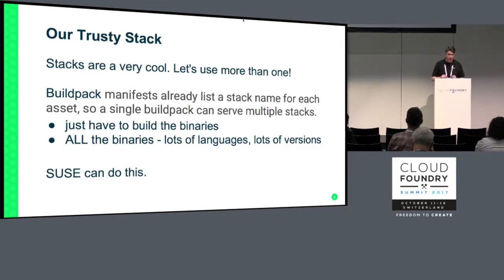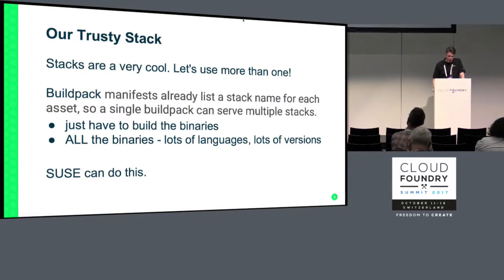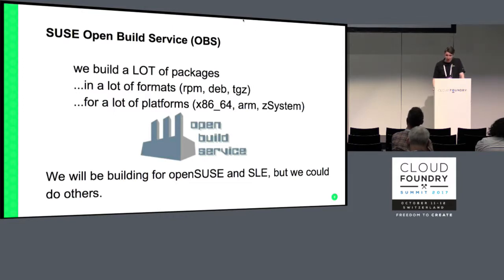This is something that is different from how it was in the Windows DEA and the Windows stack, but we've found a way — a way that was baked into Cloud Foundry — so that a single build pack, if it's packaged with the binaries for both stacks, can work equally well on both. You just have to build binaries, and you have to build a lot of them, because there are a lot of build packs and each has a number of language versions. So we're going to build all those binaries. SUSE can do this.